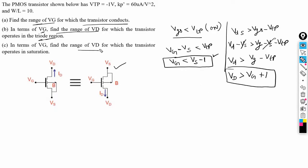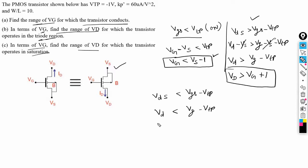Let's go to the third part. We need to find out the range of VD in terms of VG such that the transistor operates in the saturation region. The condition for a PMOS transistor to operate in saturation is VDS less than VGS minus VTP. Similarly, we can simplify this as VD less than VG minus VTP, which gives VD less than VG plus 1.